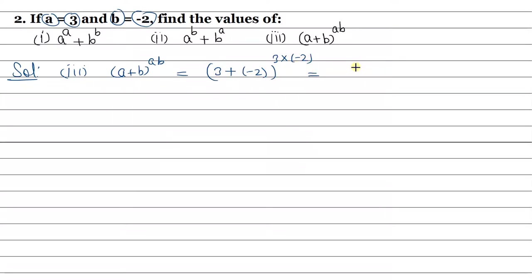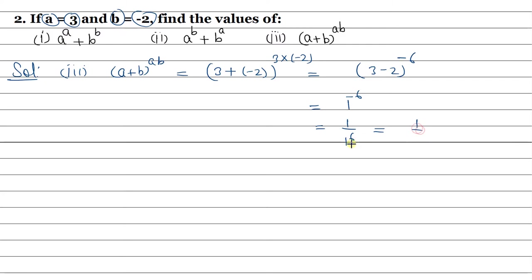So we get 3 minus 2 whole to the power — and 3 times minus 2 gives minus 6. So it is 1 to the power minus 6. Now, 1 to the power minus 6: since 1 raised to any exponent is always 1, we can also write it as 1 upon 1 to the power 6. Either way, 1 multiplied any number of times is 1. So the answer of the third part is 1.